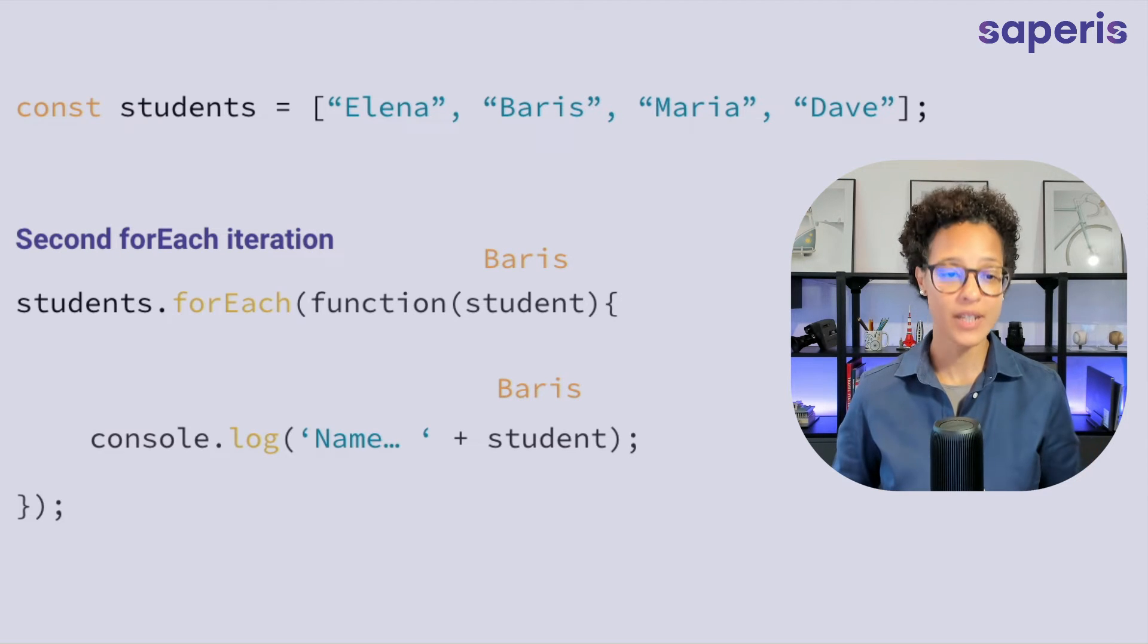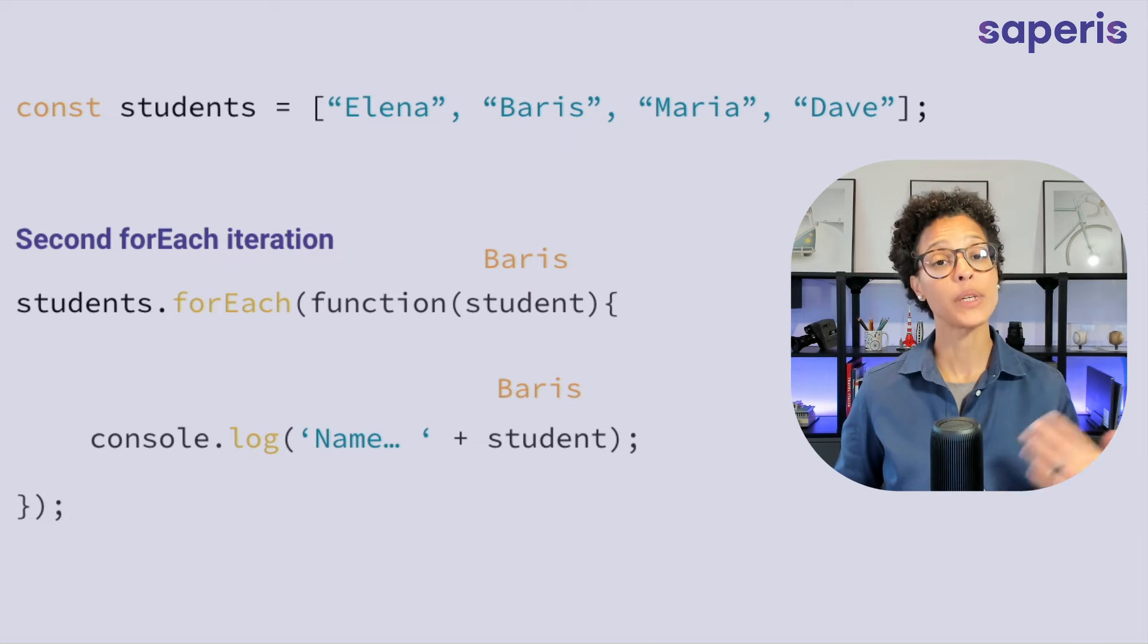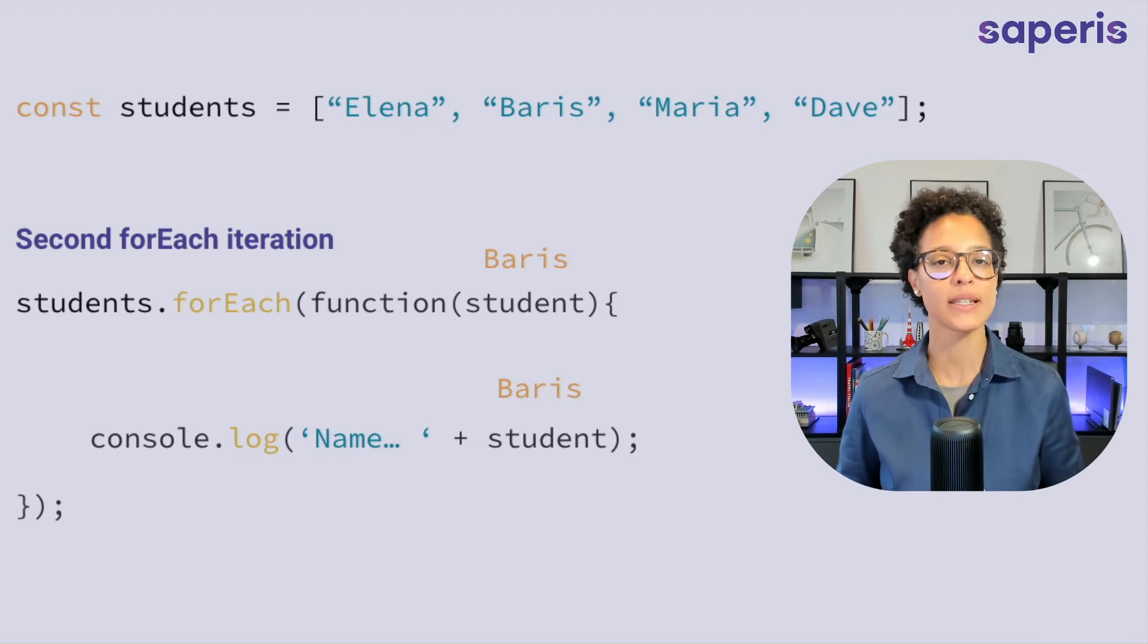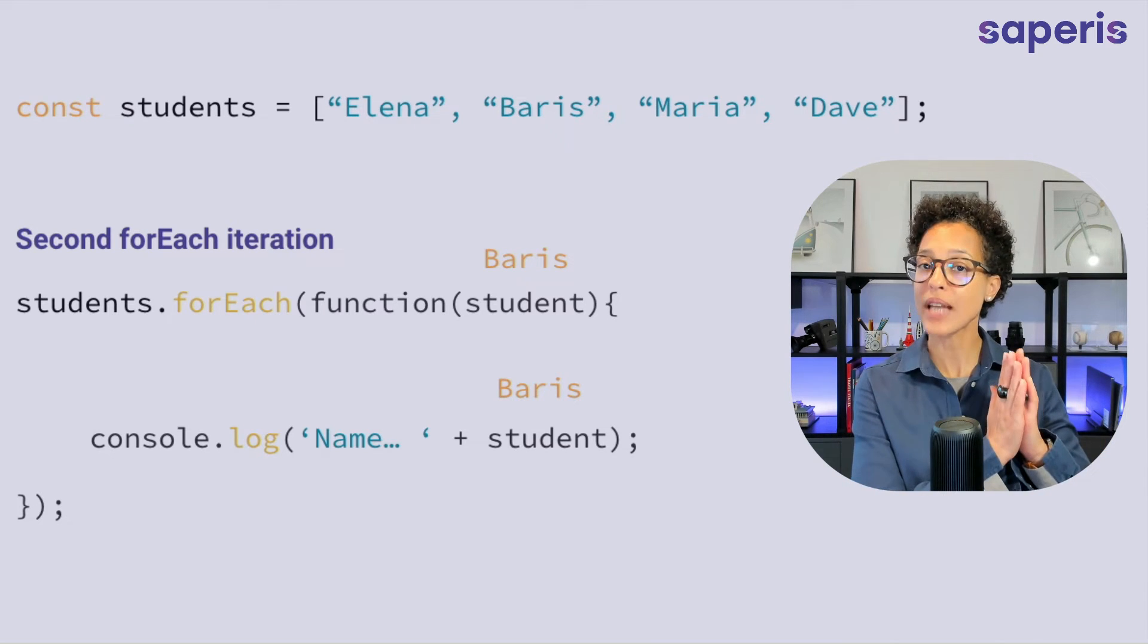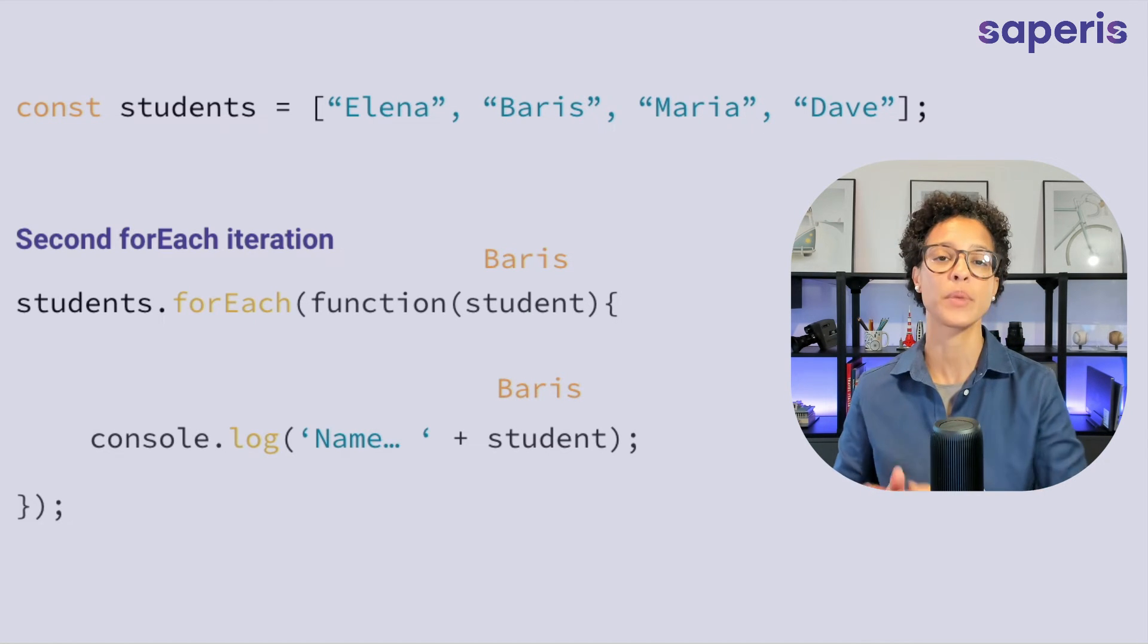If we have a look at our second iteration Baris is going to be the student that's going to be logged out to the console. Why? Because forEach kind of like has a counter built in you could say so it knows that once it's handled one element it automatically goes to the next element in the array.